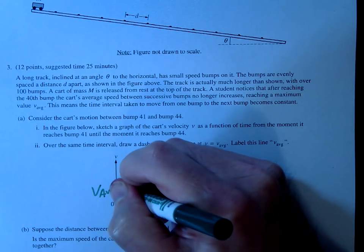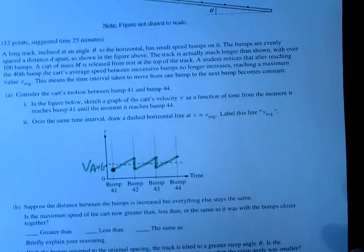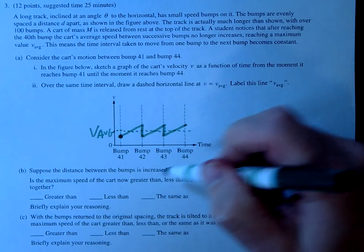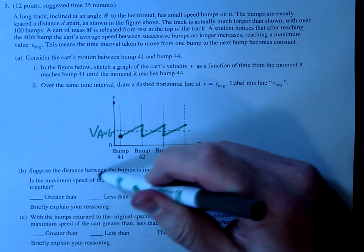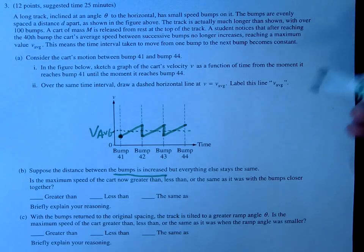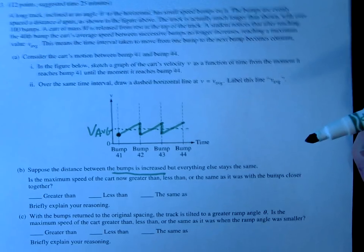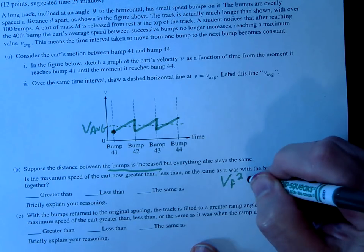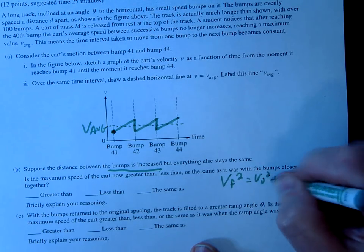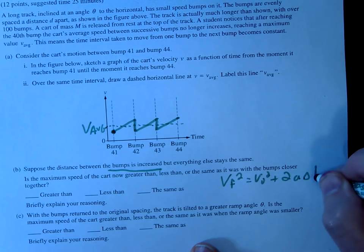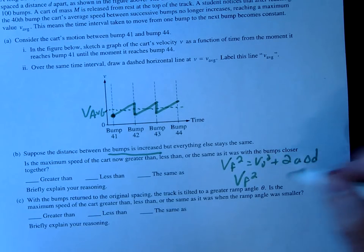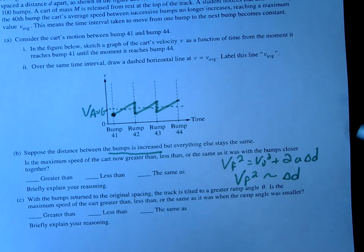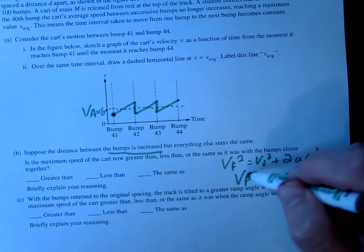Question B is asking: let's say the distance increases between the bumps, everything else stays the same. What happens to the maximum speed at this point? The governing equation for us would be our V final equation: V final squared equals V initial squared plus 2aΔD. The key component here is the proportionality between V and D. So VF² is proportional to our ΔD.